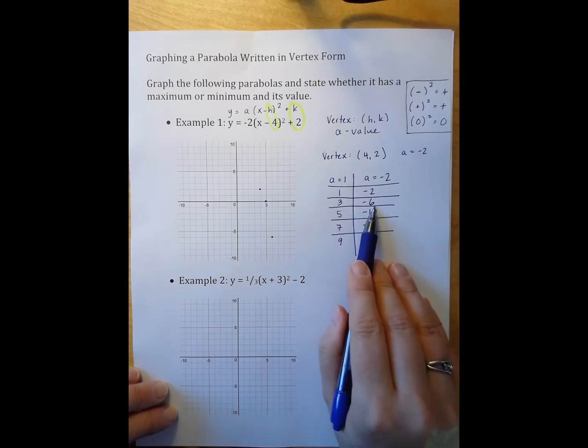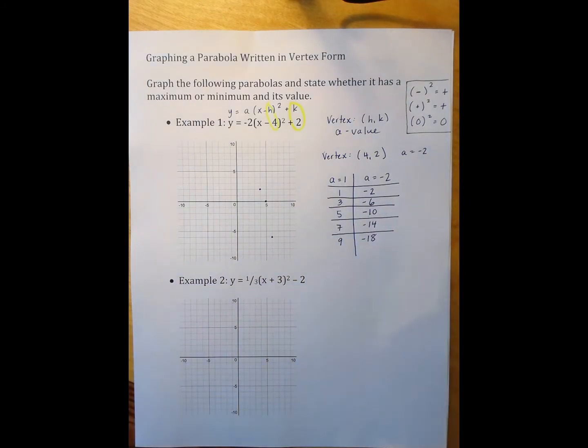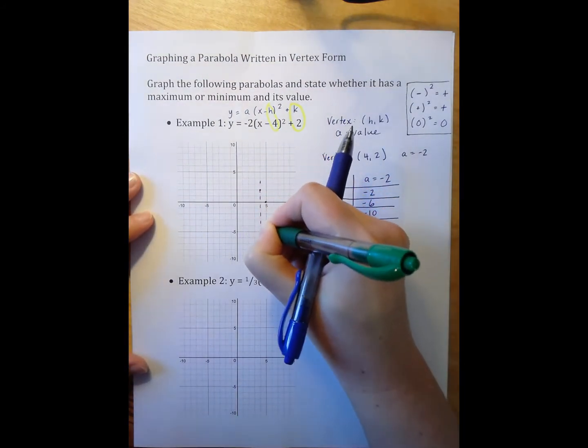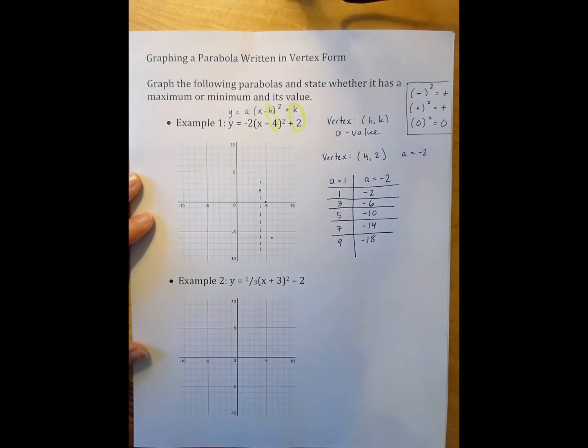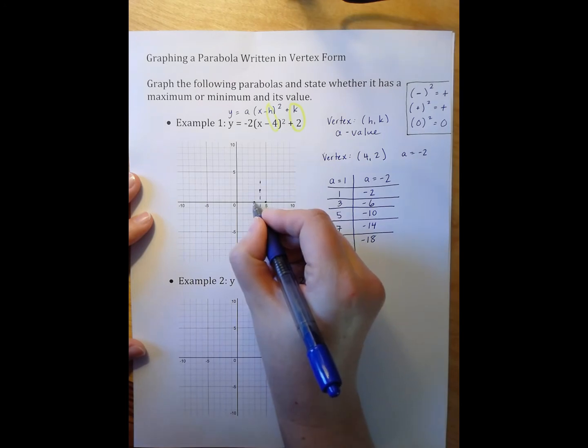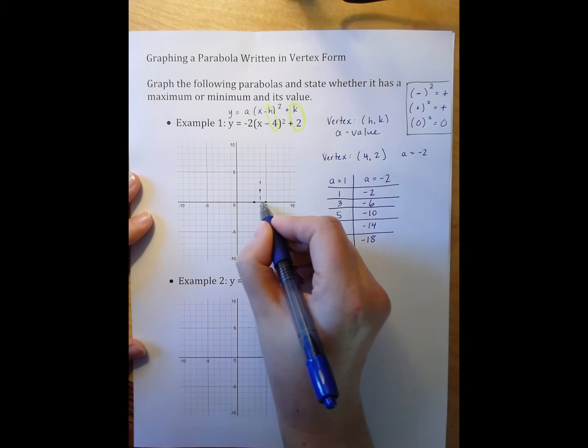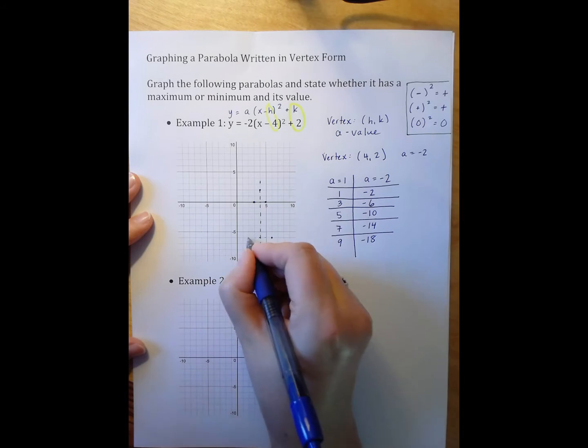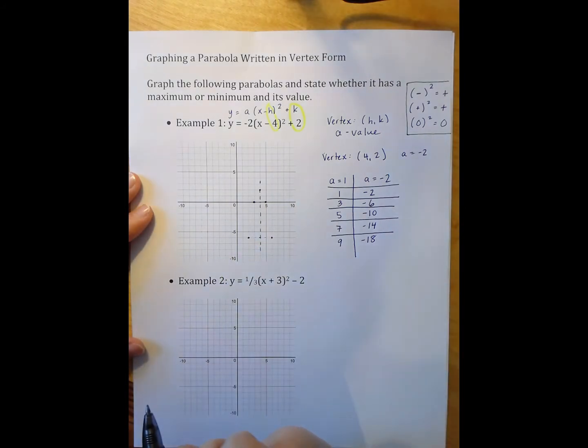Parabolas have a line of symmetry that goes through the vertex. Line of symmetry means if I folded the parabola onto itself, it would match exactly. This point right here has a matching point on the other side of the line of symmetry. One unit over, one unit over. Same with this point. This is two points from the line of symmetry, so its matching partner would be two units on the other side.